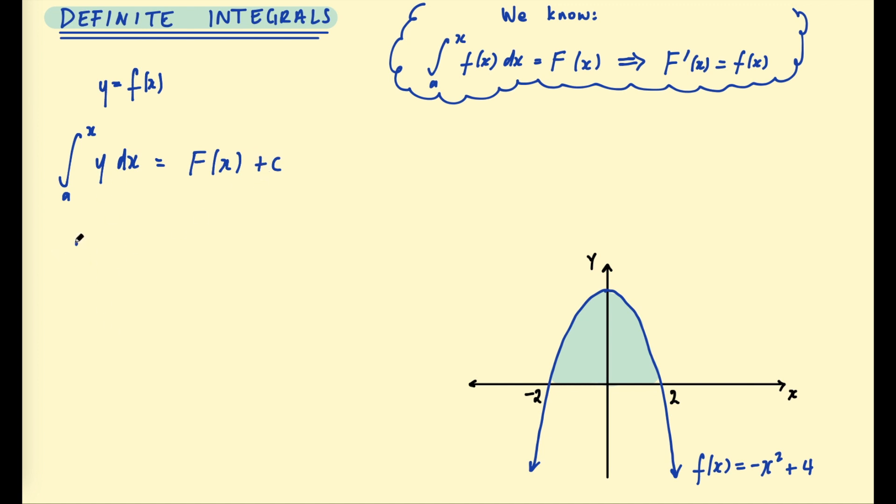We can ask what is the area from a to a under y. The area under a single point on the curve will be 0 and this is equal to F of a plus c. This gives us an equation to solve for c in terms of capital F. So capital F of a plus c is equal to 0. Therefore c equals negative F of a.